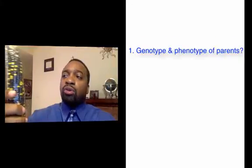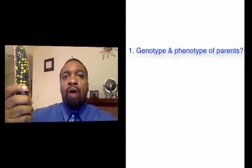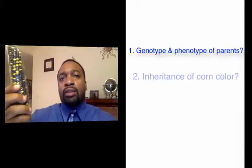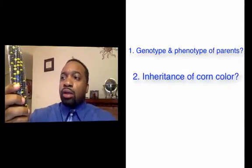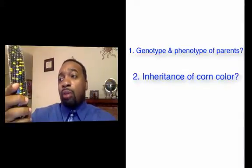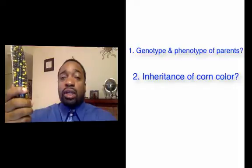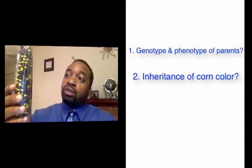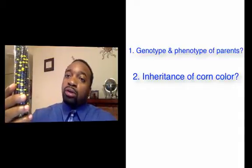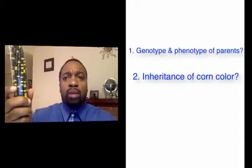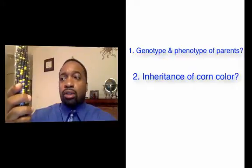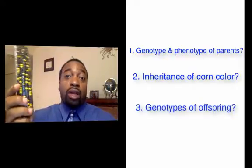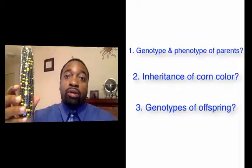In addition, we're going to figure out how color in corn is passed down. Is yellow dominant or recessive? Is purple dominant or recessive? What are the genotypes of the parents that produce these offspring? What are the phenotypes of the parents that produce this offspring?